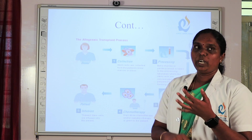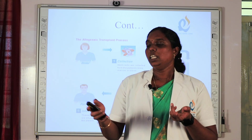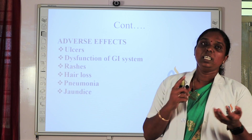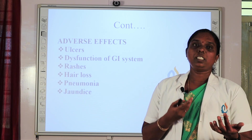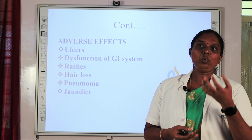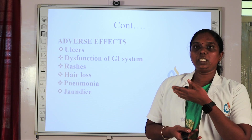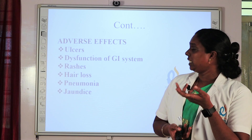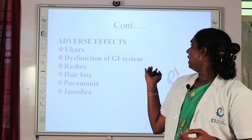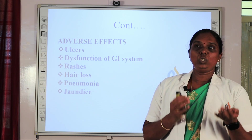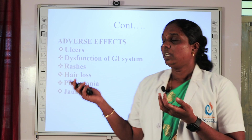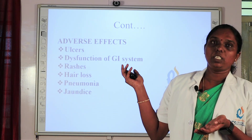Next, adverse effects of bone marrow transplantation. These include ulcers, GI system dysfunction, rashes, hair loss, pneumonia, and jaundice. Ulcers occur due to high doses of chemotherapy. Hair loss and rashes occur due to radiotherapy. Jaundice occurs because bilirubin levels become elevated.